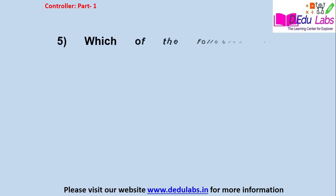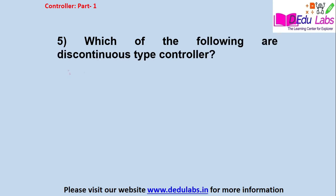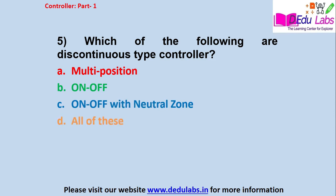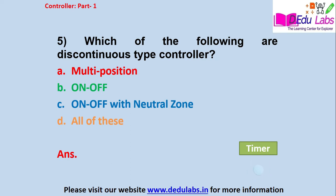Question number 5: which of the following are discontinuous type controllers? Option A: multi-position; Option B: on-off; Option C: on-off with neutral zone; Option D: all of these. The answer is Option D, all of these. In discontinuous type controllers, for a particular range of error they provide a particular position output. In on-off position, it provides only on or off depending on the error — if error is greater than zero it provides on, if error is less than zero it provides off. So all these options are considered discontinuous type controllers.